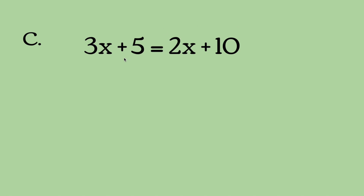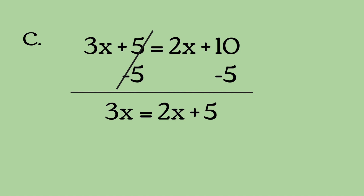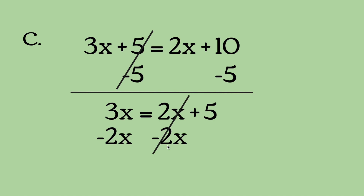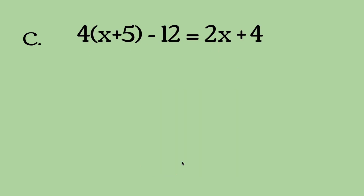Next is C, which is 3x plus 5 equals 2x plus 10. This might look a little tricky, but you solve it like anything else. First, subtract 5 on both sides, which leaves 3x equals 2x plus 5. Now subtract 2x on both sides — this side cancels out — and we're left with x equals 5, because 3x minus 2x is 1x, so 1x equals 5, meaning x equals 5.